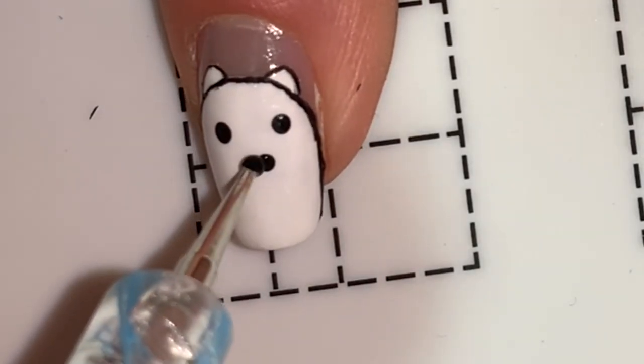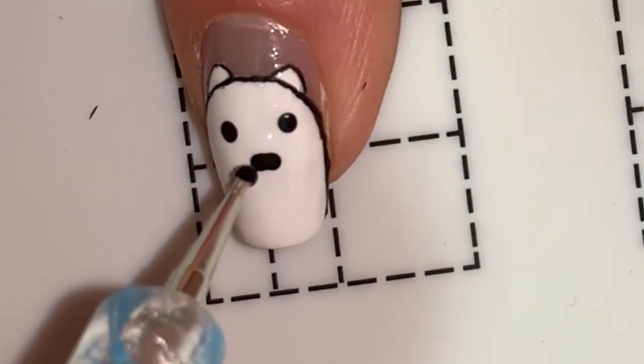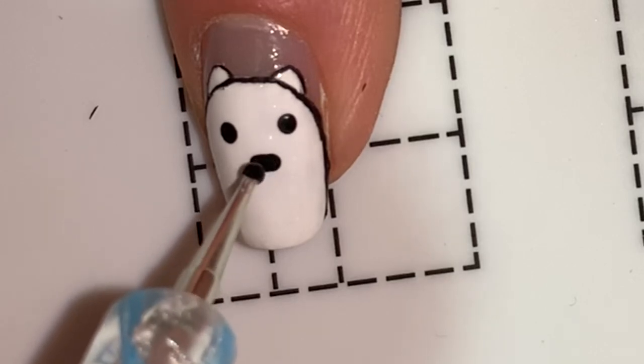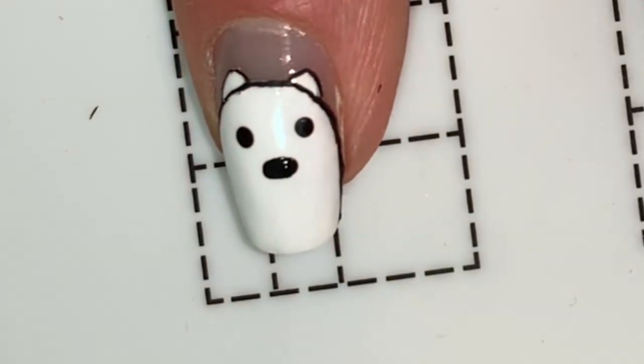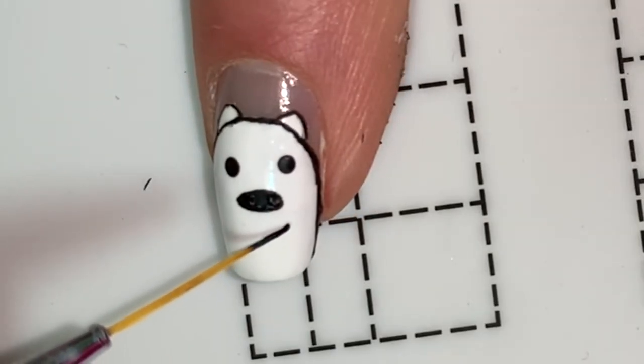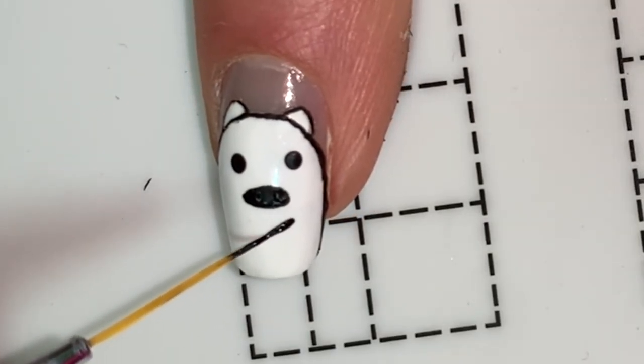Taking that same end of the dotting tool, I'm going to do two and a half dots for the nose. Going back to my detail brush, I'm just going to do a slanted line for the mouth.